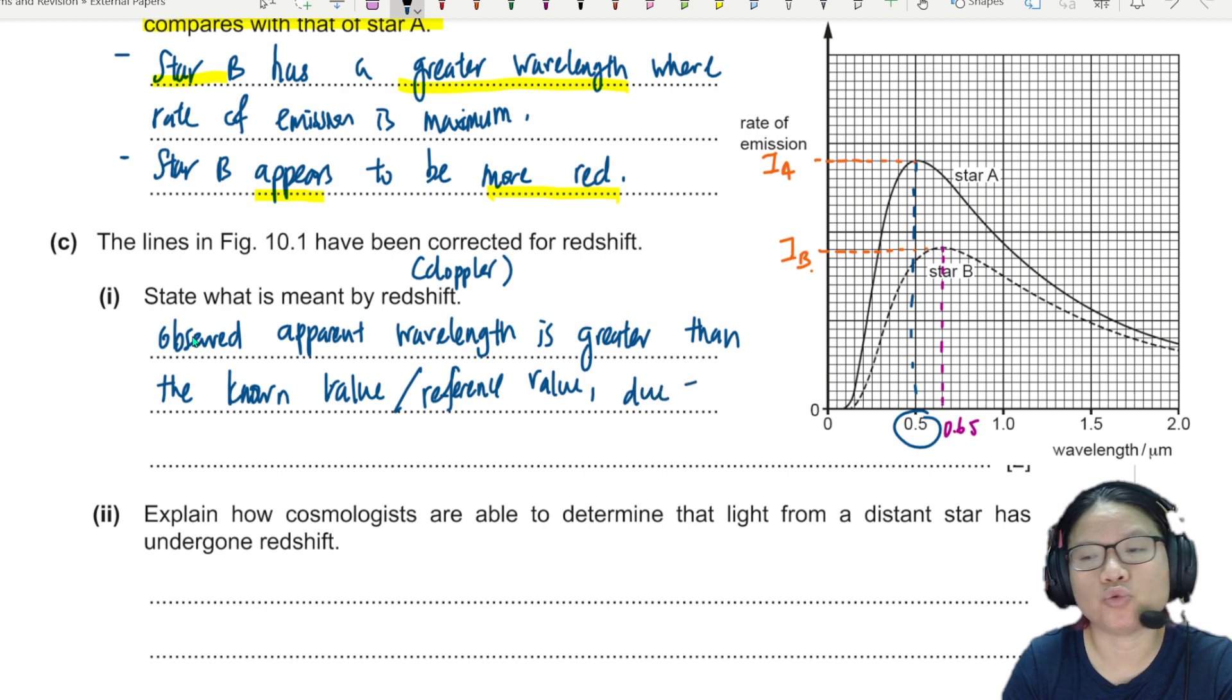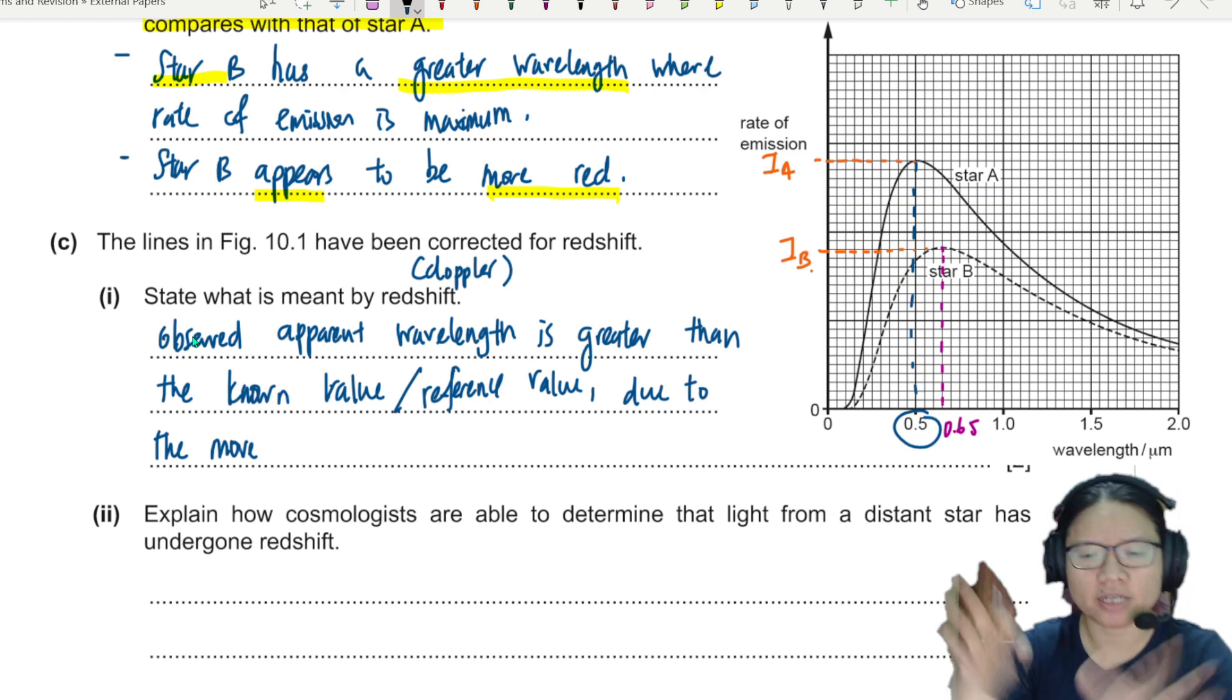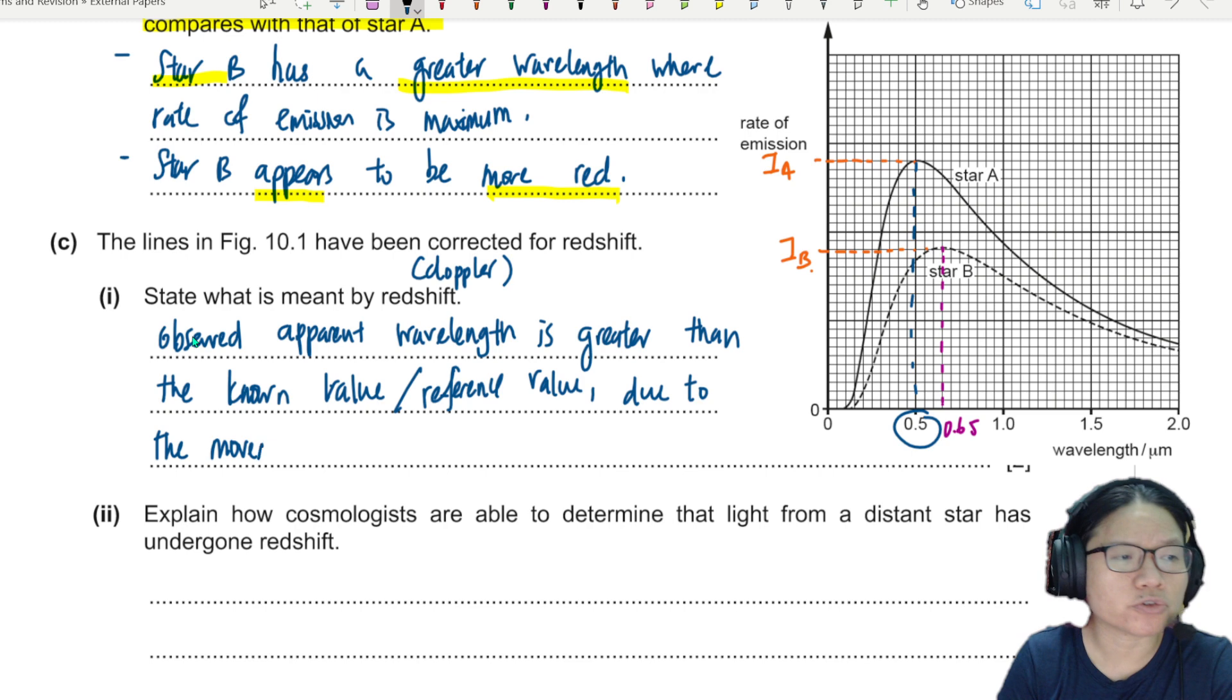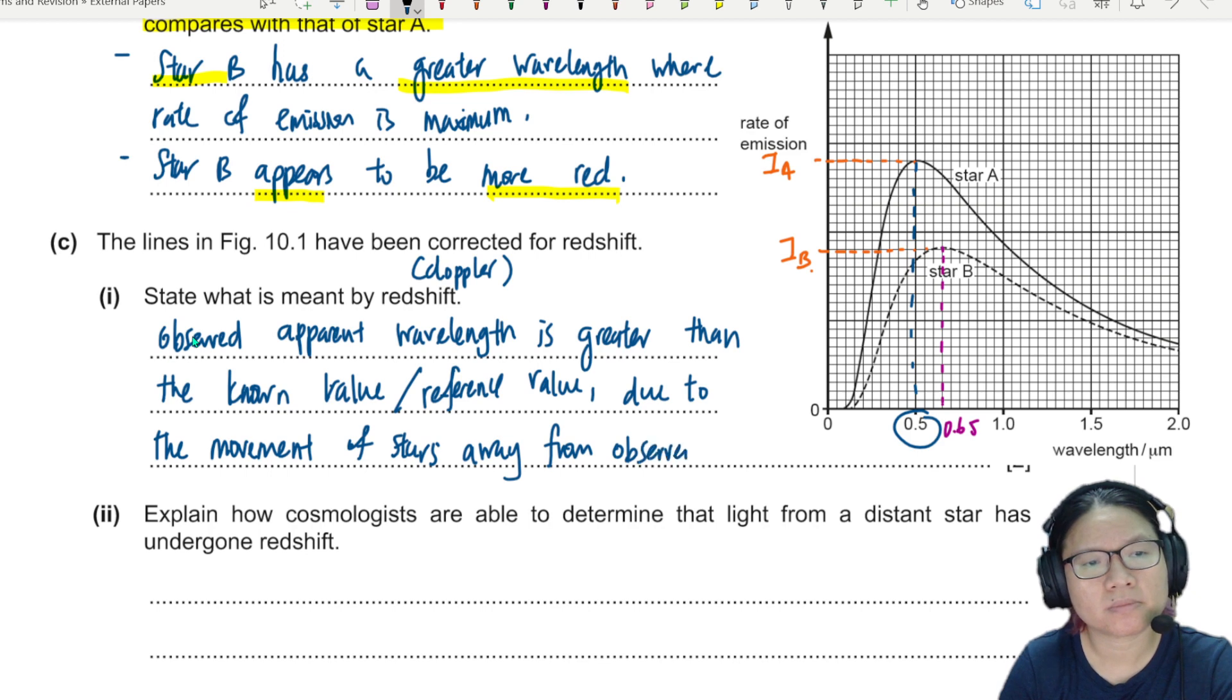And why is there a change in wavelength? This is due to the movements. And we know from Hubble's law, the Big Bang theory, everything is running away from us. So due to the movement of stars away from the observer. So this is red shift. Two marks here, two points to mention.